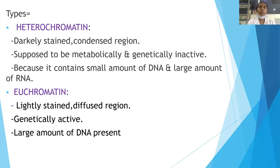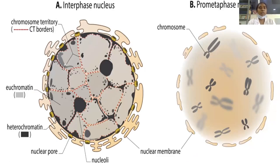Types of chromatin: heterochromatin and euchromatin. Heterochromatin is the darkly stained, condensed region, which is metabolically and genetically inactive. It contains a small amount of DNA and large amounts of RNA. Euchromatin is the lightly stained and diffuse region. Heterochromatin is darkly stained and condensed, whereas euchromatin is lightly stained and diffuse. Euchromatin is genetically active, while heterochromatin is genetically inactive. Large amounts of DNA are present in euchromatin, whereas small amounts are present in heterochromatin. In the interphase nucleus, euchromatin appears lightly stained and heterochromatin darkly stained.